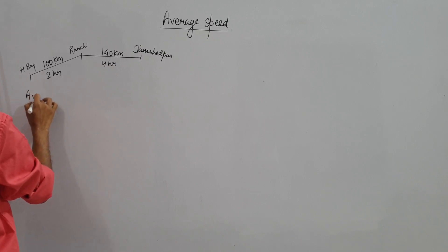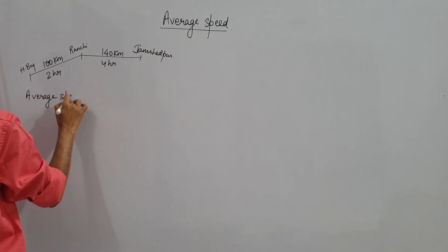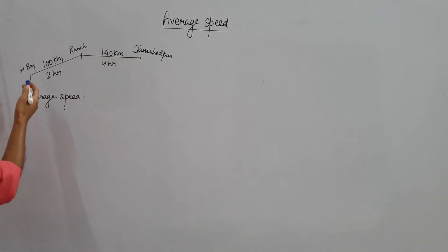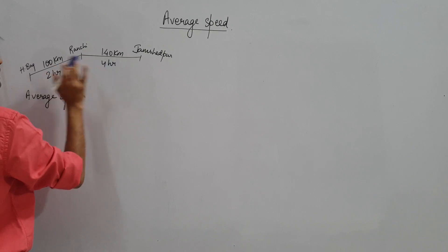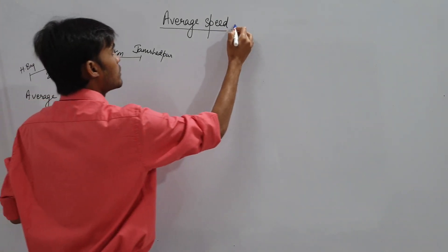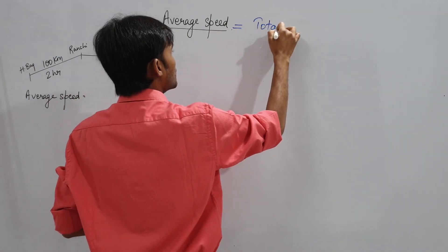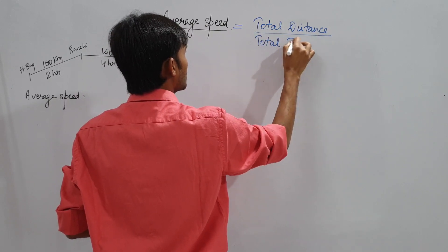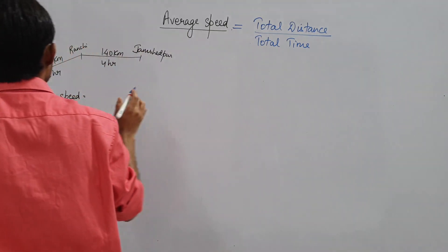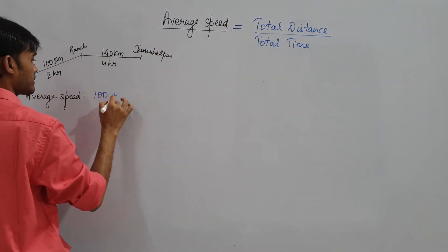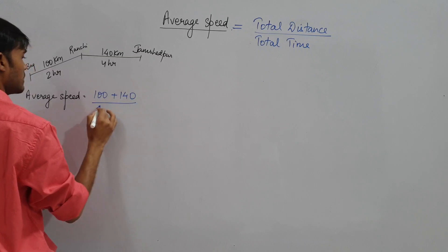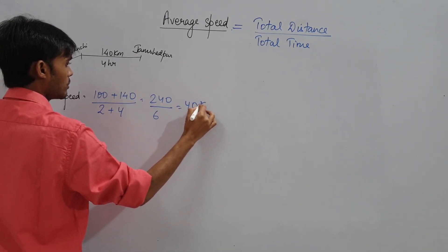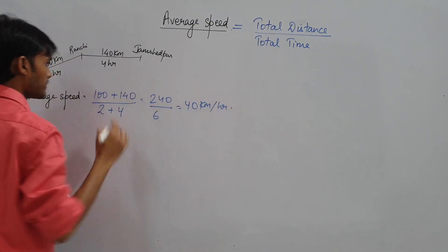In this question, total distance is given and total time is also given. Average speed equals total distance upon total time. So: 100 plus 140, divided by 2 plus 4, which gives 240 by 6, equals 40 km per hour. Nothing else needs to be done.